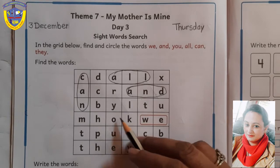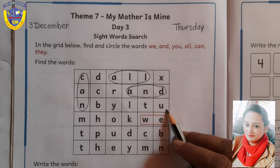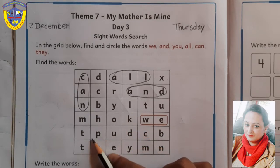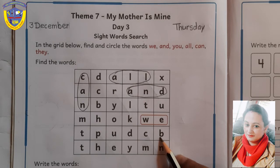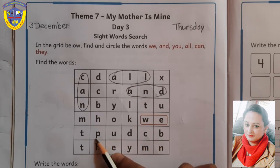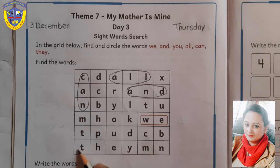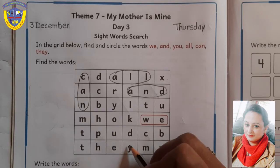And A-double-L. In the next line, no sight word is there. No sight word is there. No sight word is there. And the next line, find out. No sight word is there. In the next line, yes. T-H-E-Y.